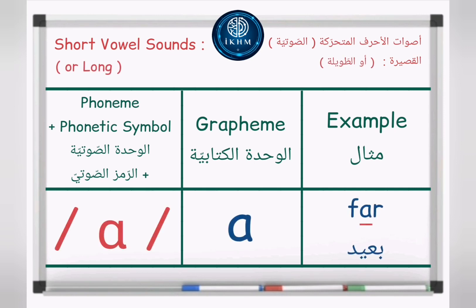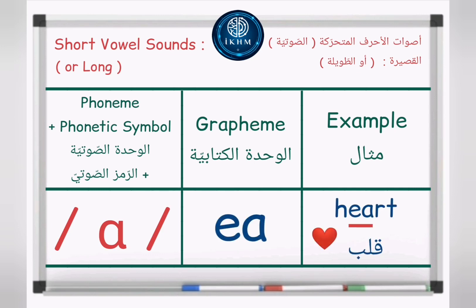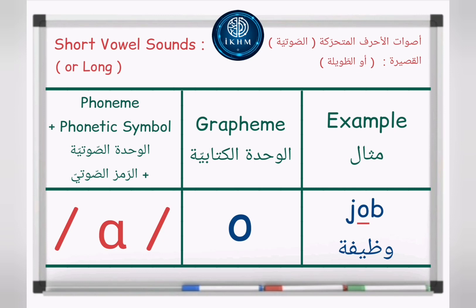Phoneme plus phonetic symbol: /ɑ/. Grapheme: letter A. Example — far, /ɑ/, far. Grapheme: letters E-A. Example — heart, /ɑ/, heart. Grapheme: letter O. Example — job, /ɑ/, job.